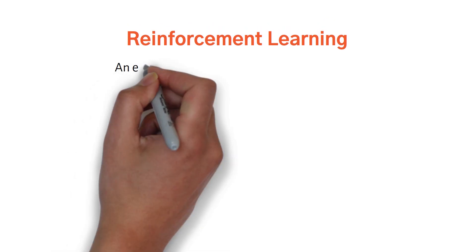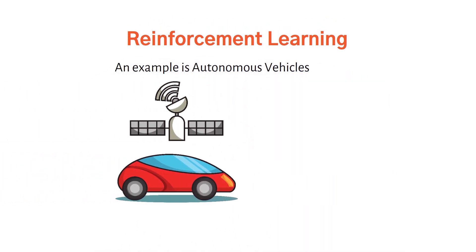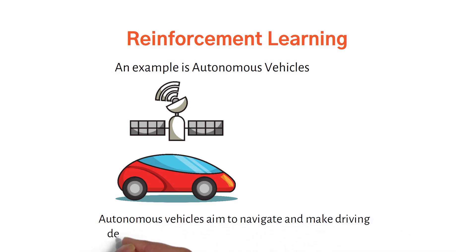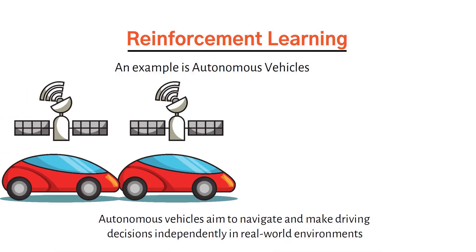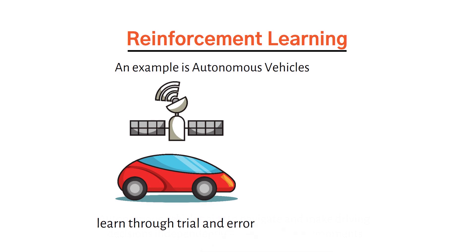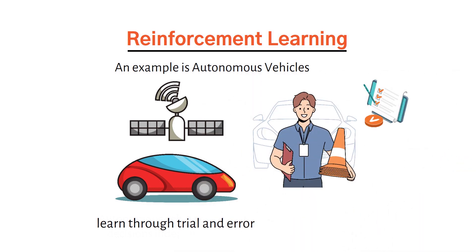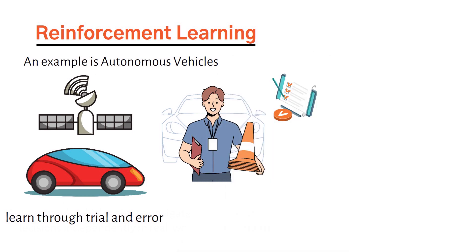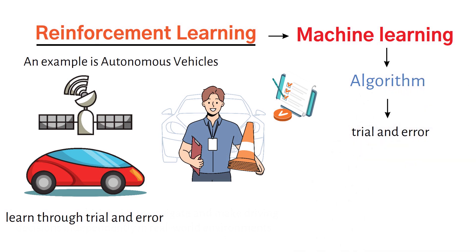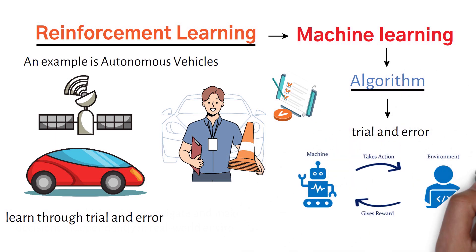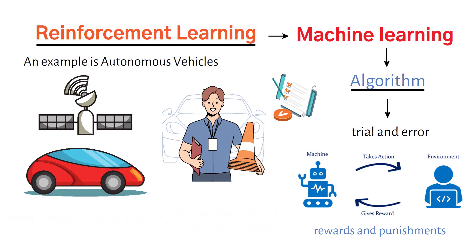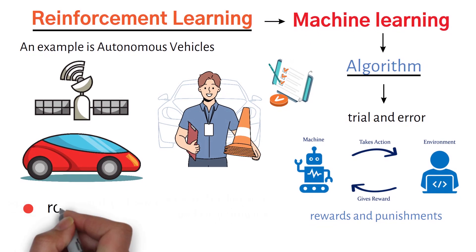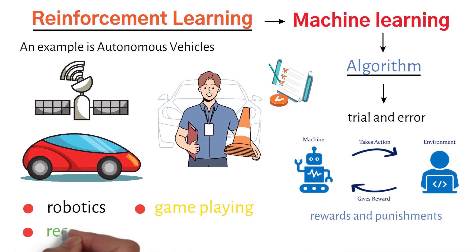Reinforcement learning. An example is autonomous vehicles, which aim to navigate and make driving decisions independently in real-world environments. Reinforcement learning is suitable as it enables the vehicle to learn through trial and error, receiving feedback — rewards or penalties — based on its driving actions. The algorithm interacts with an environment and learns to make decisions based on rewards and punishments. Reinforcement learning is used in robotics, game-playing, and recommendation systems.